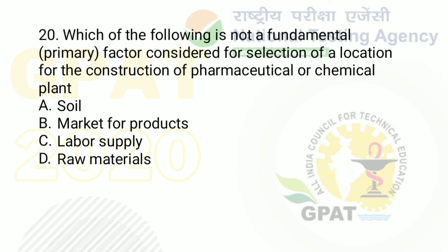Question number 20: which of the following is not a fundamental or primary factor considered for selection of a location for construction of a pharmaceutical or chemical plant? The right answer is option A — soil. Soil is not considered; however, all remaining parameters are very important and need to be considered.